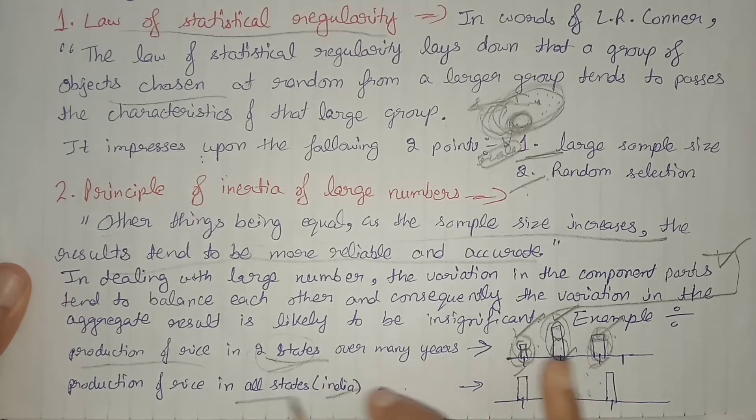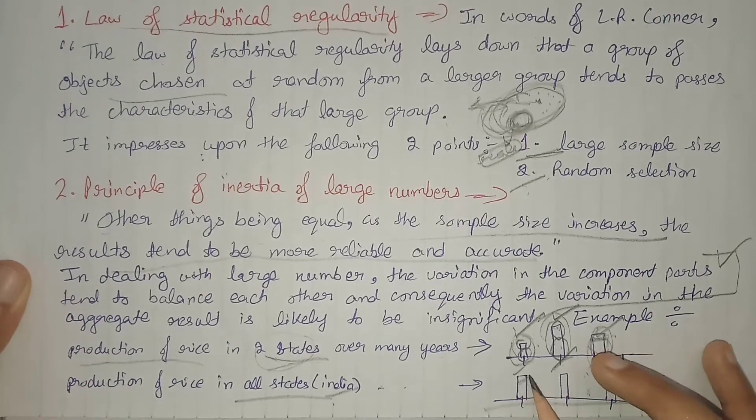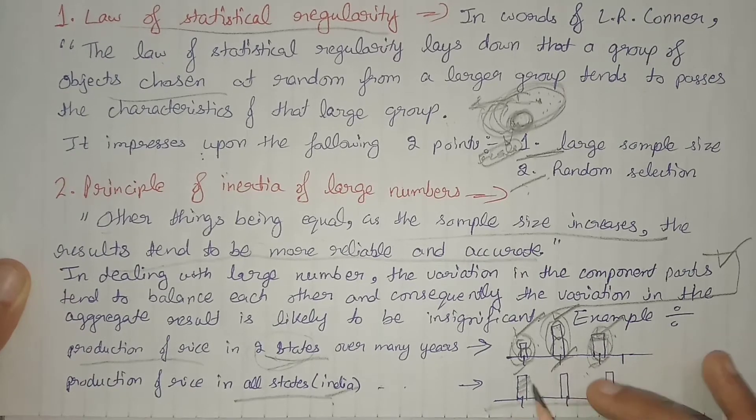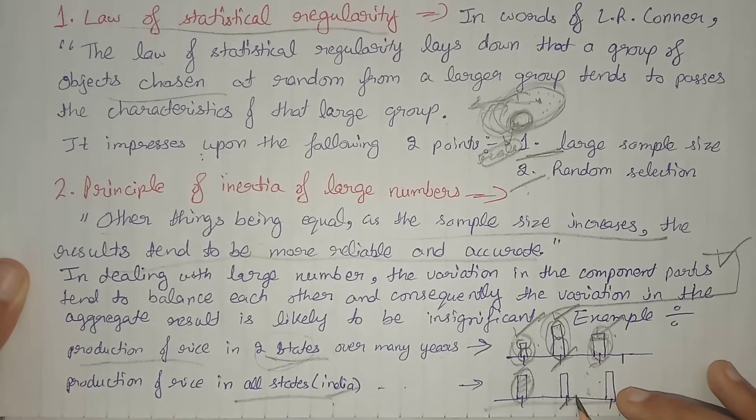Now if we take a sample of all the states of India and make a chart based on their rice production, in the first year assuming all states had normal production, the overall value would be this.